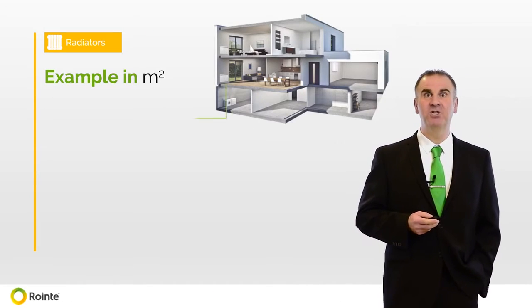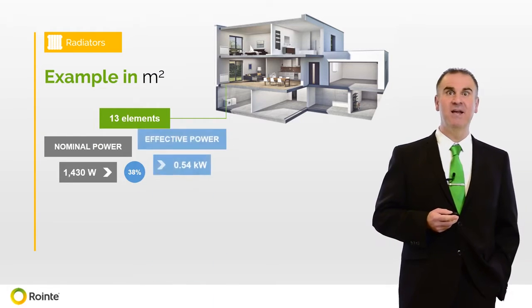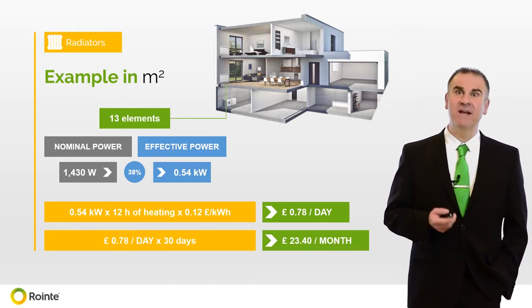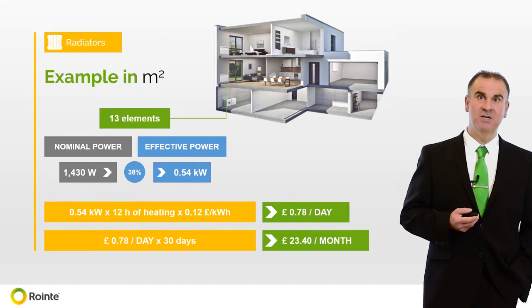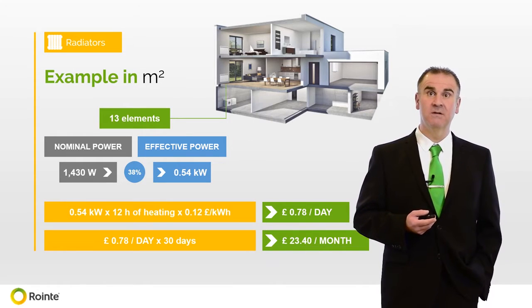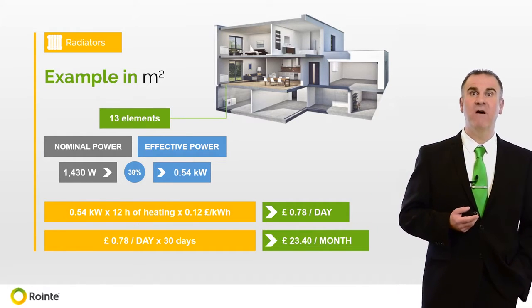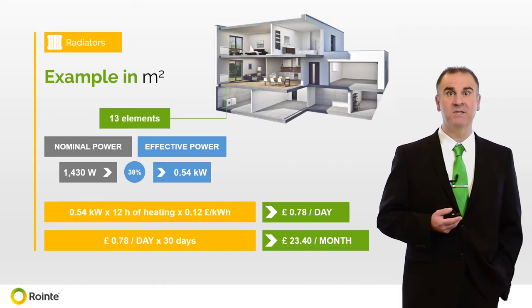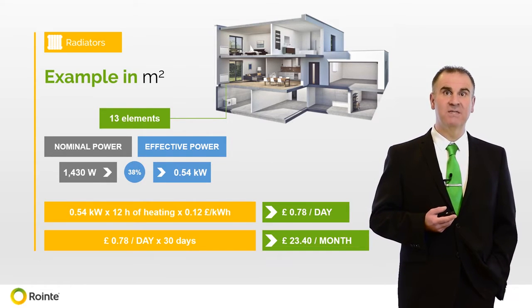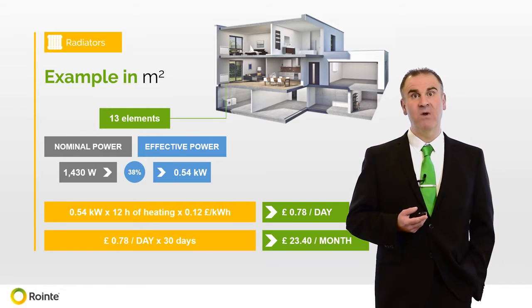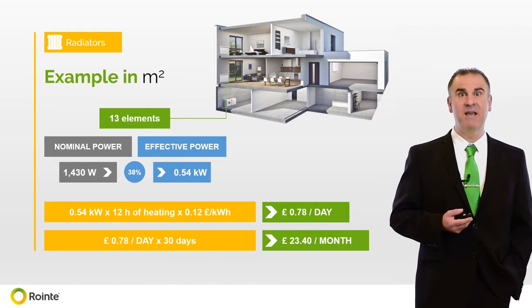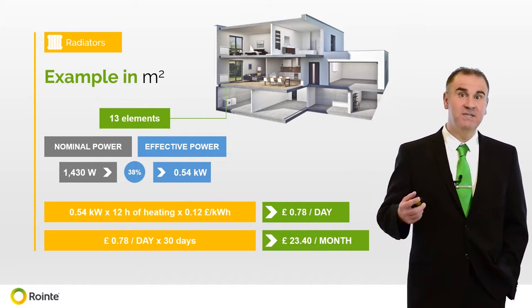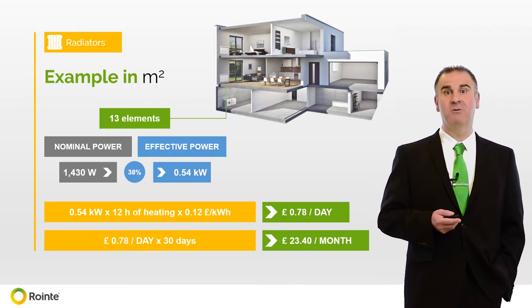This example shows the energy usage of a 13-element Rowente radiator, which has a nominal power of 1.43 kilowatts. The effective power of the radiator, with the 38% usage, is 0.54 kilowatts. The calculation is therefore 0.54 kilowatts by 12 hours, multiplied by a cost of 12 pence per kilowatt hour, which equals 78 pence per day. So this radiator running for 12 hours will cost 78 pence. We then take the 78 pence, multiply it by 30 days, to give the monthly cost being £23.40.